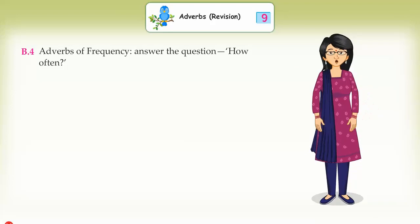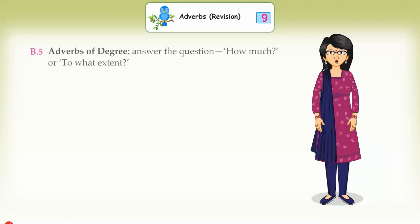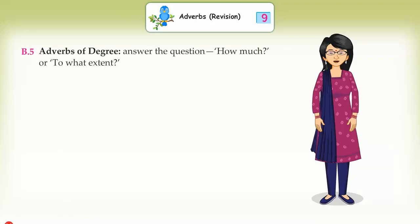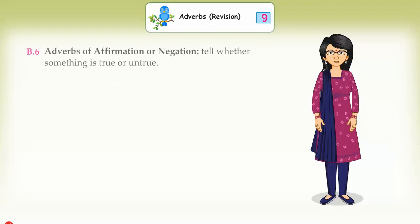B4: Adverbs of frequency answer the question 'how often'. Examples: She is always late. They often visit us on Sundays. B5: Adverbs of degree answer the question 'how much' or 'to what extent'. Examples: The show was almost over. He is very intelligent.